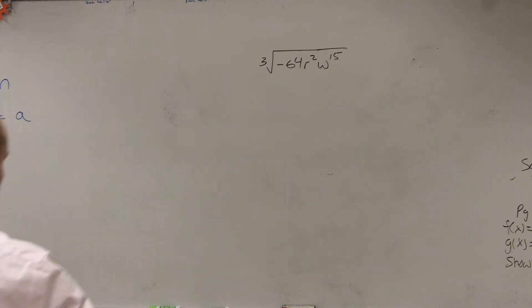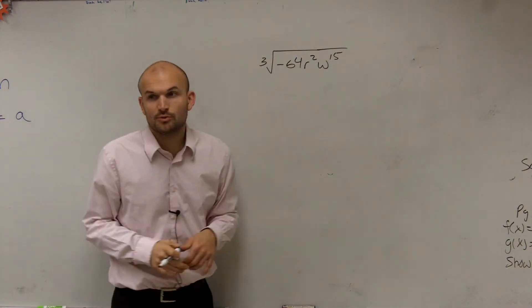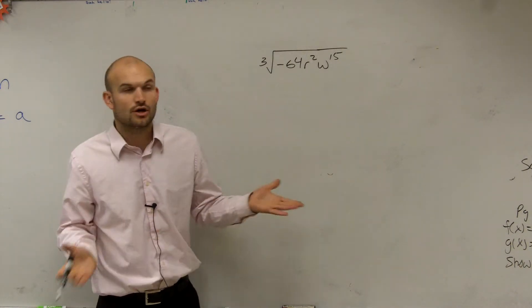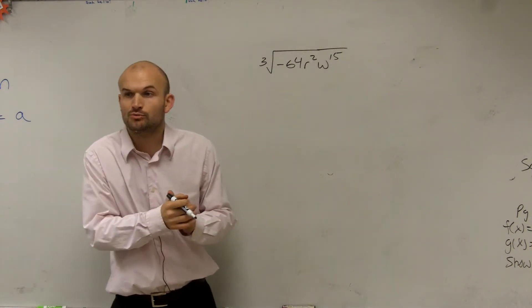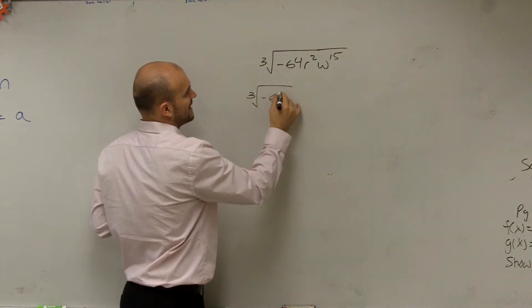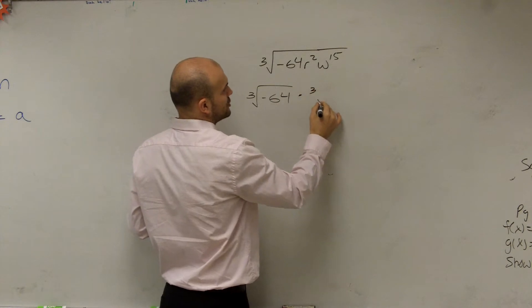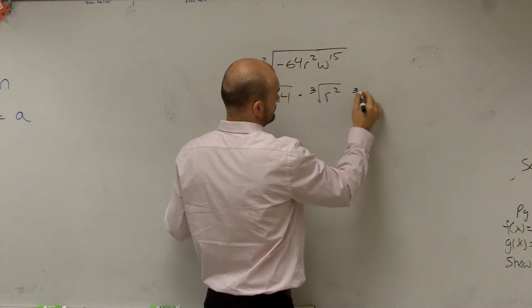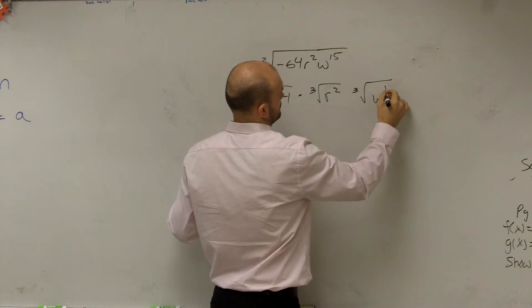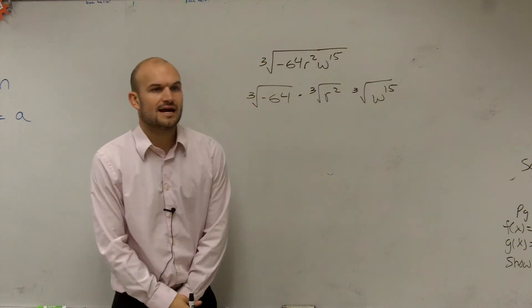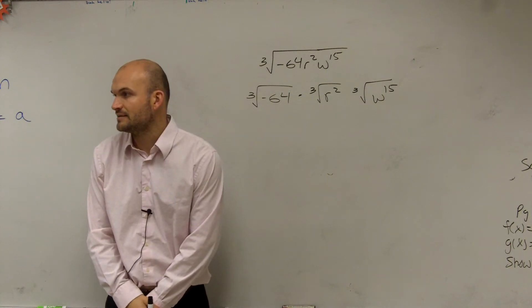All right, so ladies and gentlemen, I have the cube root of negative 64 r squared w to the 15th. What I want to see is, can I take the cube root of each one of these numbers? So what I'll do is I'll split it up: the cube root of negative 64 times the cube root of r squared times the cube root of w to the 15th.